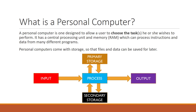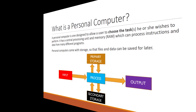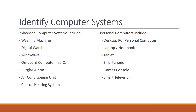Let's have a look at some examples of embedded and personal computer systems. Embedded systems include things like washing machines, digital watches, microwaves, on-board computers in a car, burglar alarms, air conditioning units and central heating systems, to name just a few. Personal computers include desktop PCs, laptops or notebooks, tablets, smartphones, games consoles and even smart televisions.